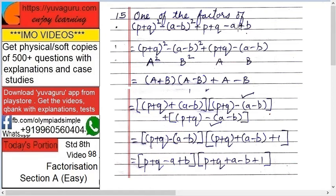Next: one of the factors of (p+q)² - (a-b)² + p+q - a+b is... Basically, you have to factorize again. So here, make it easier. Take (p+q) as capital A and (a-b) as capital B.